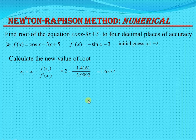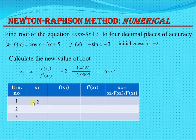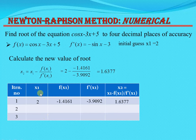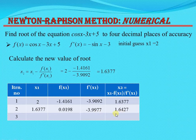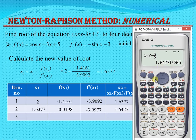Prepare a table of iterations. First iteration: x1 = 2, f(x1) = minus 1.4161, f'(x1) = minus 3.9092, x2 = 1.6377. Second iteration: x1 = 1.6377, f(x1) = 0.0198, f'(x1) = minus 3.9977, x2 = 1.6427. The calculator gives the same values, confirming the results.